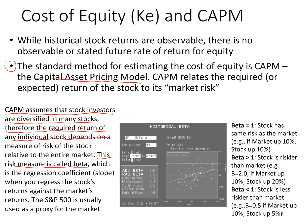I took a screenshot from a Bloomberg screen. What you see is a scatter graph where the x-axis is the returns of the stock market and the y-axis is the returns of Walmart. Every one of these points represents, on a given date over a given period, what was the return of the market and what was the return of Walmart. We fit a best-fit regression line through this data, and the slope of that regression line is what we call beta.